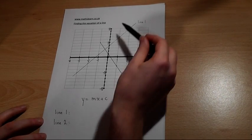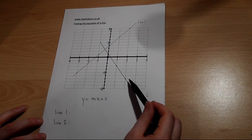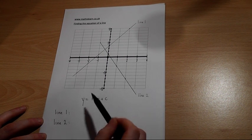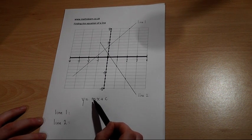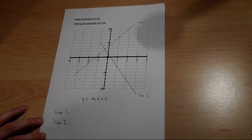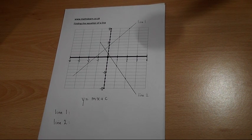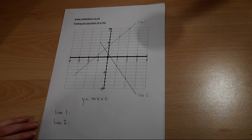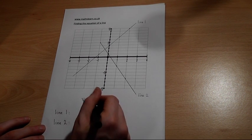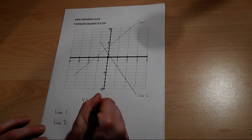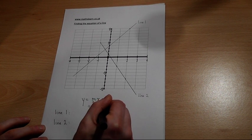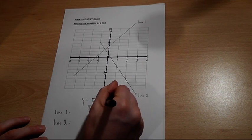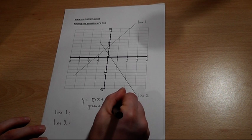Lines which are at angles are always given by an equation of the form y equals something x plus c, and as discussed in two earlier videos, this number here is always the gradient and this number is always the y-intercept.